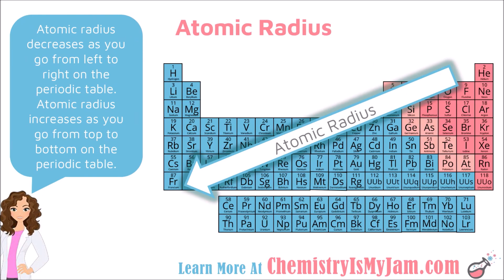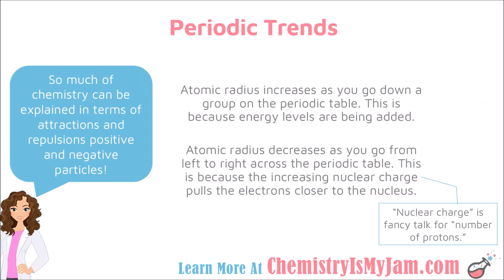In general, atomic radius increases as you go from right to left on the periodic table and as you go down the periodic table. Among the main body elements, francium should have the largest atomic radius. Atomic radius increases going down because each row adds an energy level, and energy levels take up space. It decreases going left to right because increasing nuclear charge — more protons — pulls electrons closer, shrinking the atom.